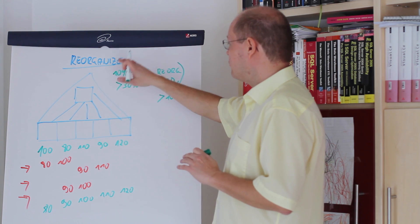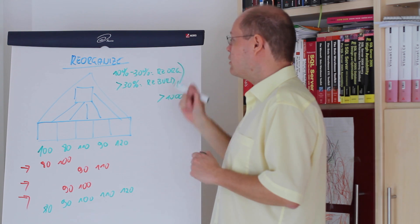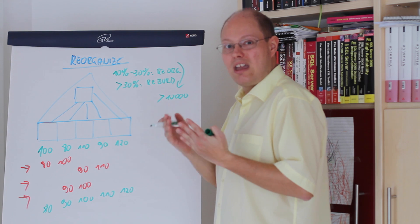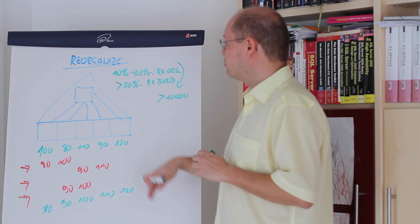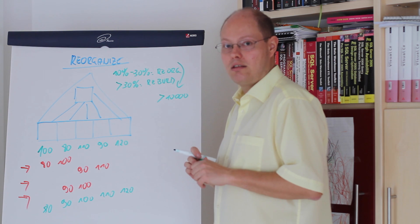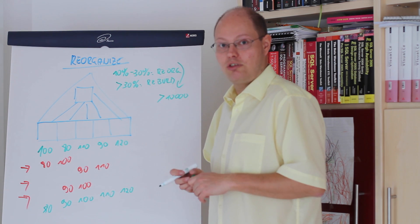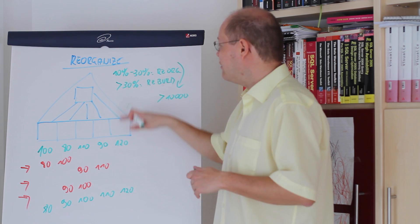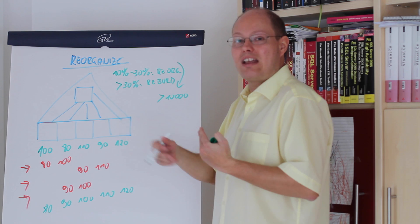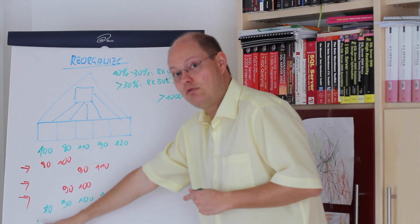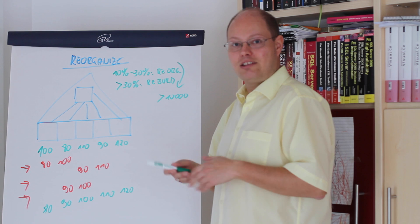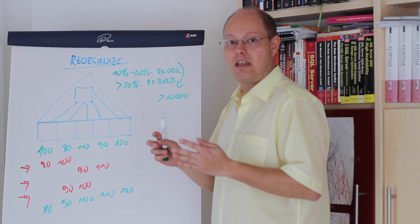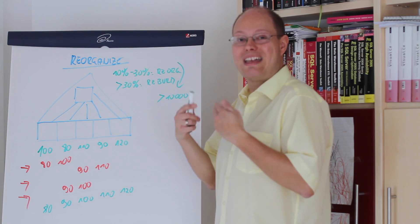The idea behind these numbers is very simple. When you are dealing with a small index fragmentation, the individual system transactions will be faster than one huge rebuild operation. When you are dealing with a larger index fragmentation, the rebuild will be faster than the individual system transactions. Let's switch now over to SQL Server Management Studio where we will see how we can perform rebuild and reorganize operations on our indexes.